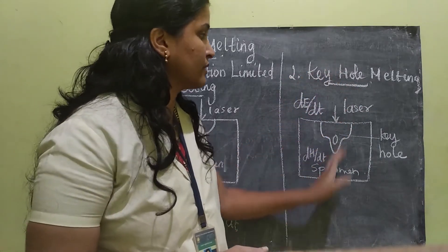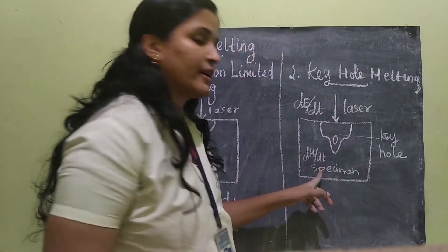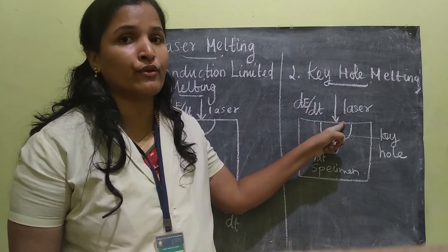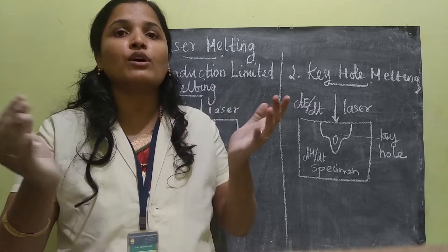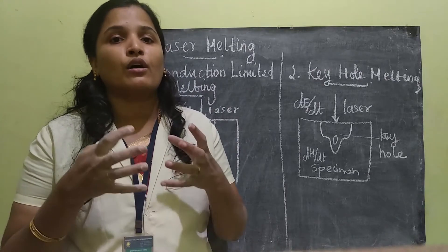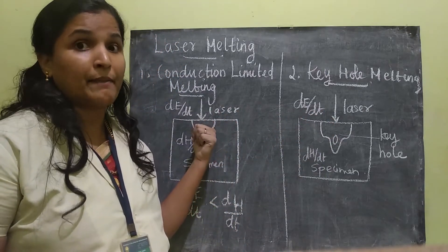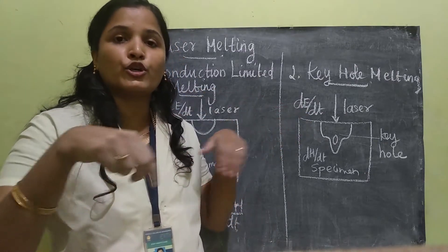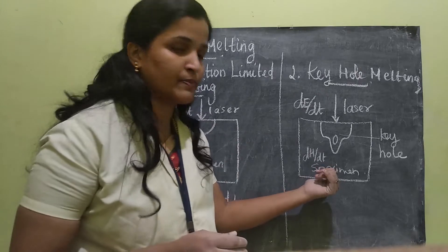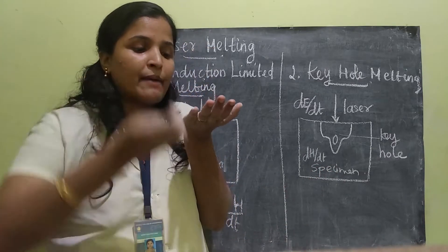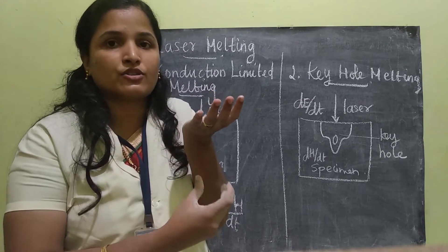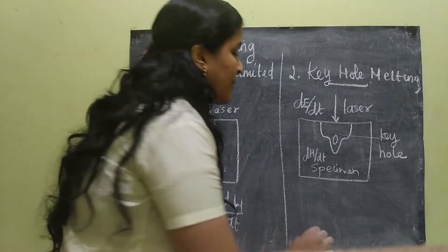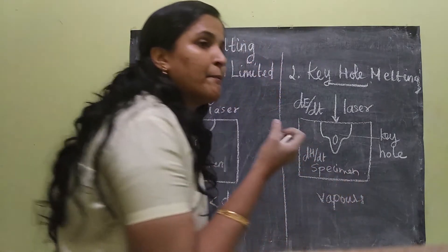So first we should see the construction. Here the laser is allowed to fall on a specimen. Remember, high power laser is allowed to fall. Because of the high power laser, more amount of area will be melted. Here we get a cylindrical shaped melting area. Just remember we have a cube shaped specimen. If the laser is injected on it, around a cylindrical shaped structure the area will be melted. During this melting process, some of the vapors will be trapped.